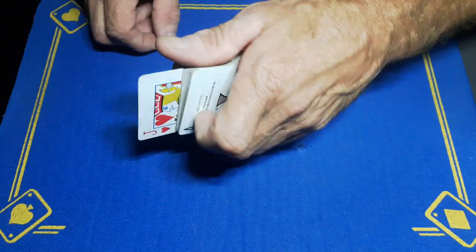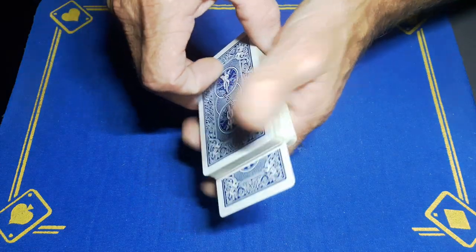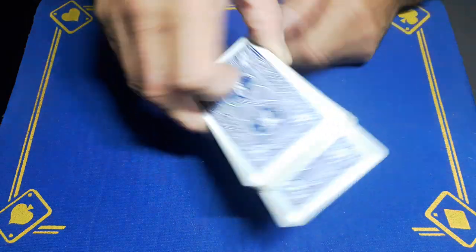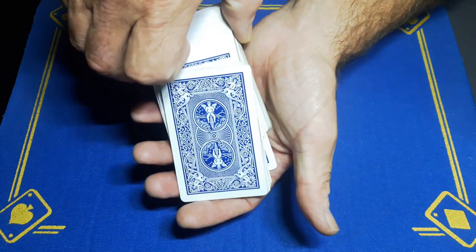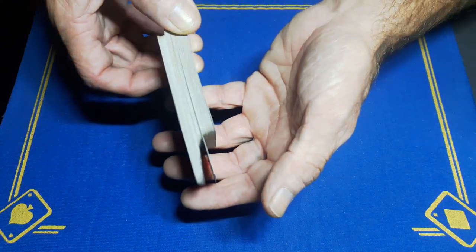look at it. As you turn your hand over, you're going to take the deck, thumb on one side, fingers on the other, and you're going to let this top portion of the cards fall, covering the outjogged chosen card. And when you strip off these cards to do the Hindu shuffle, you're going to contact that